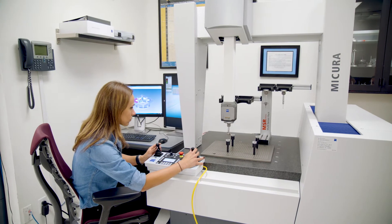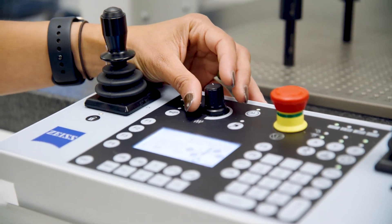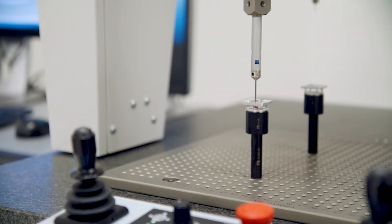With the Zeiss Mercura, we can program off-site, offline, from the machine while it's doing inspections. Once those inspections are validated and proven, an operator can come in and run their own part as a first article.